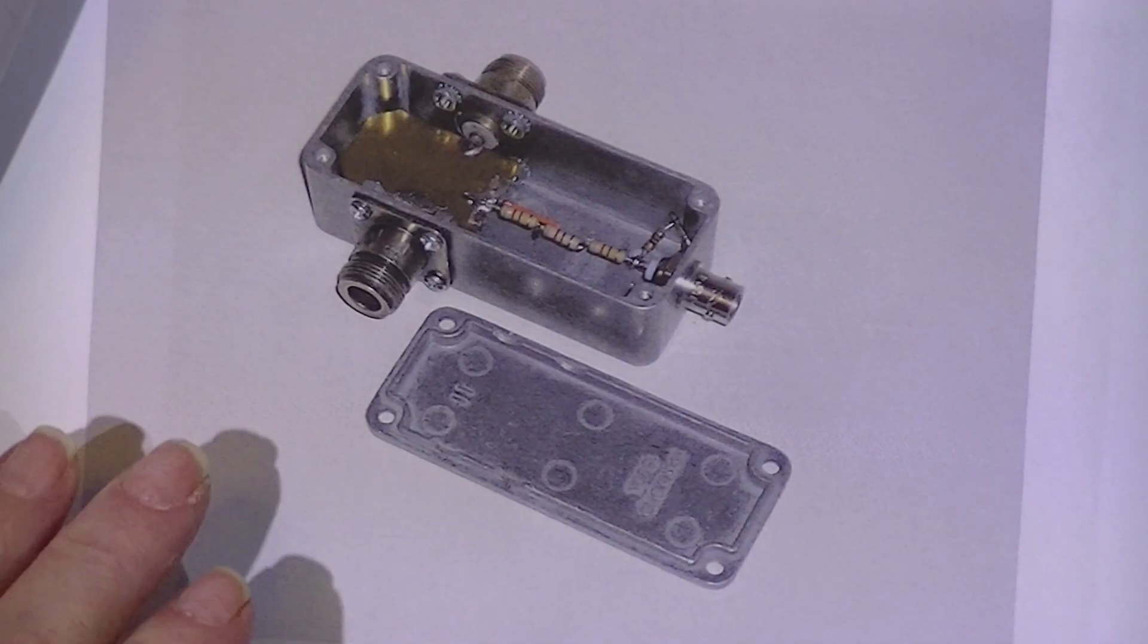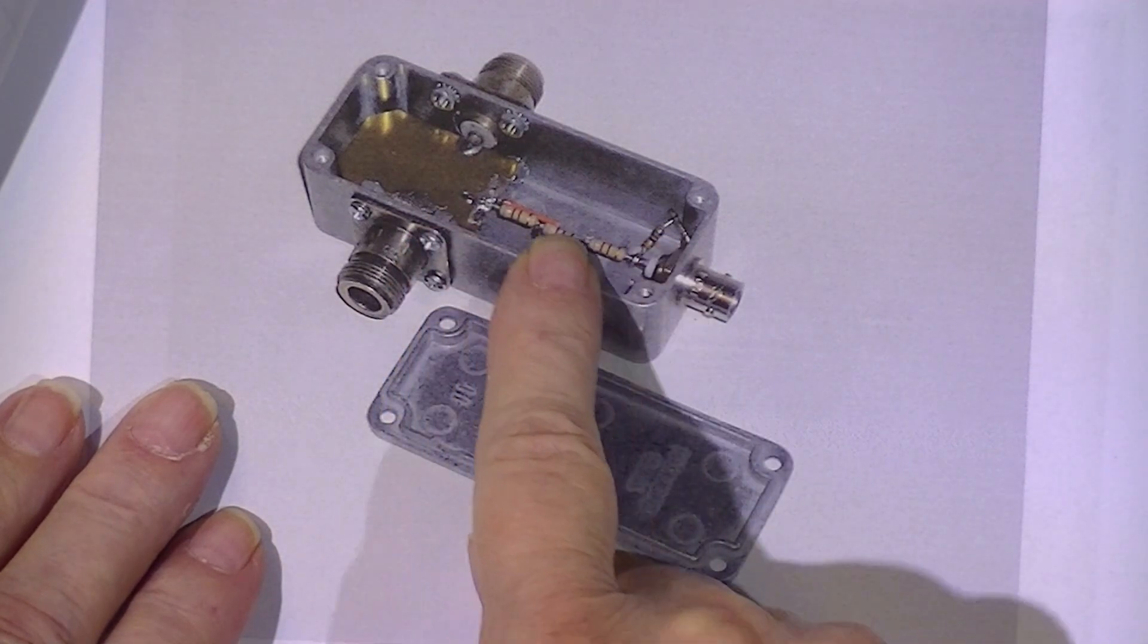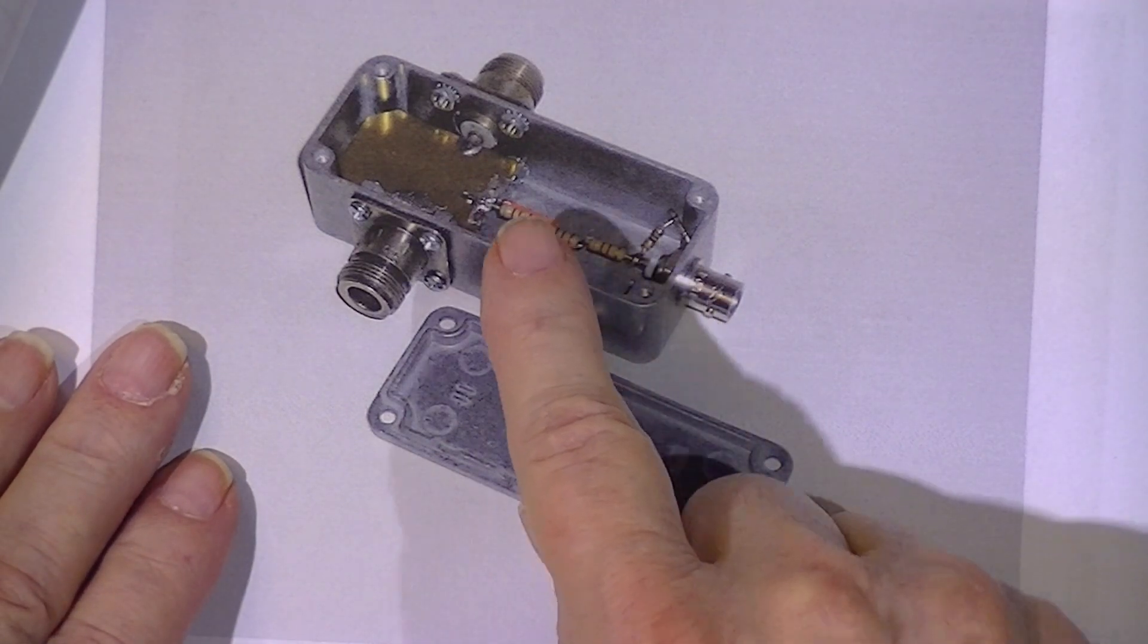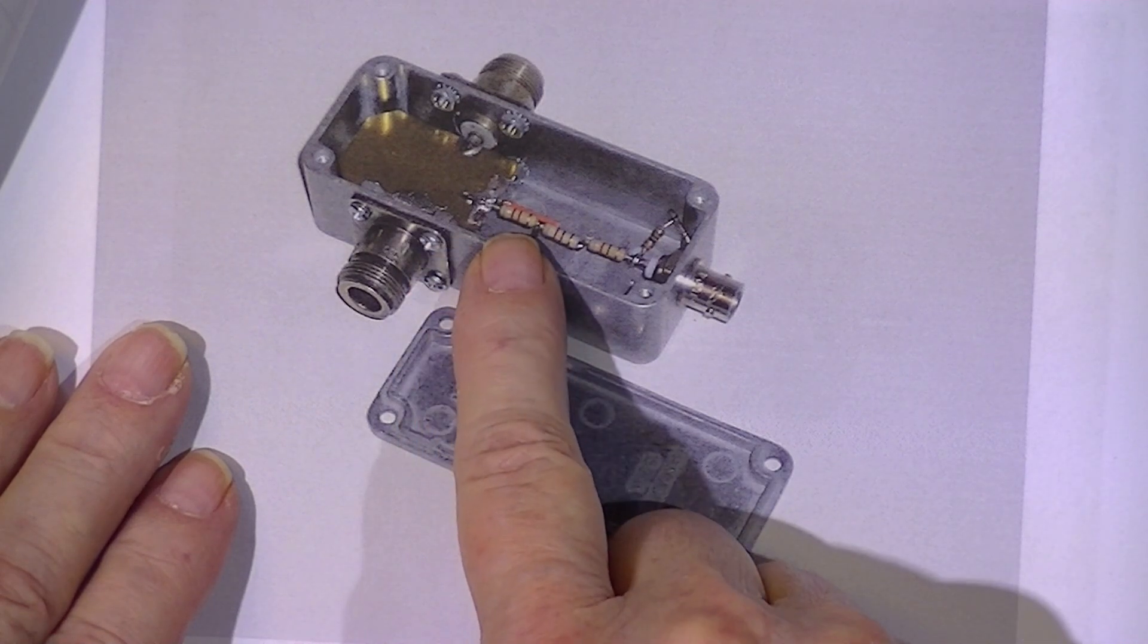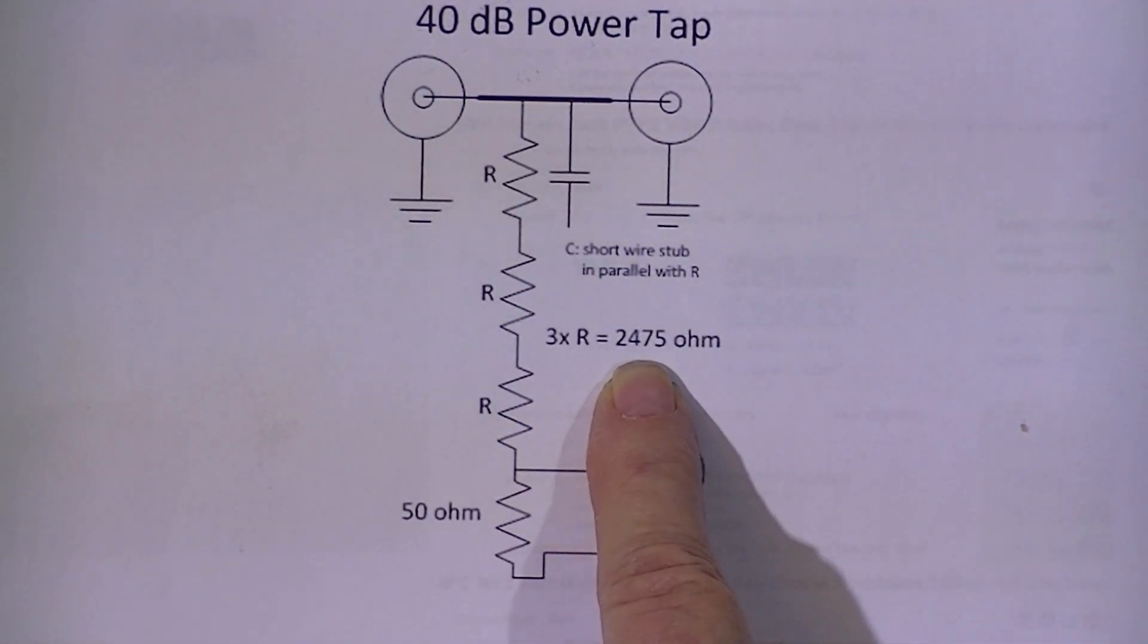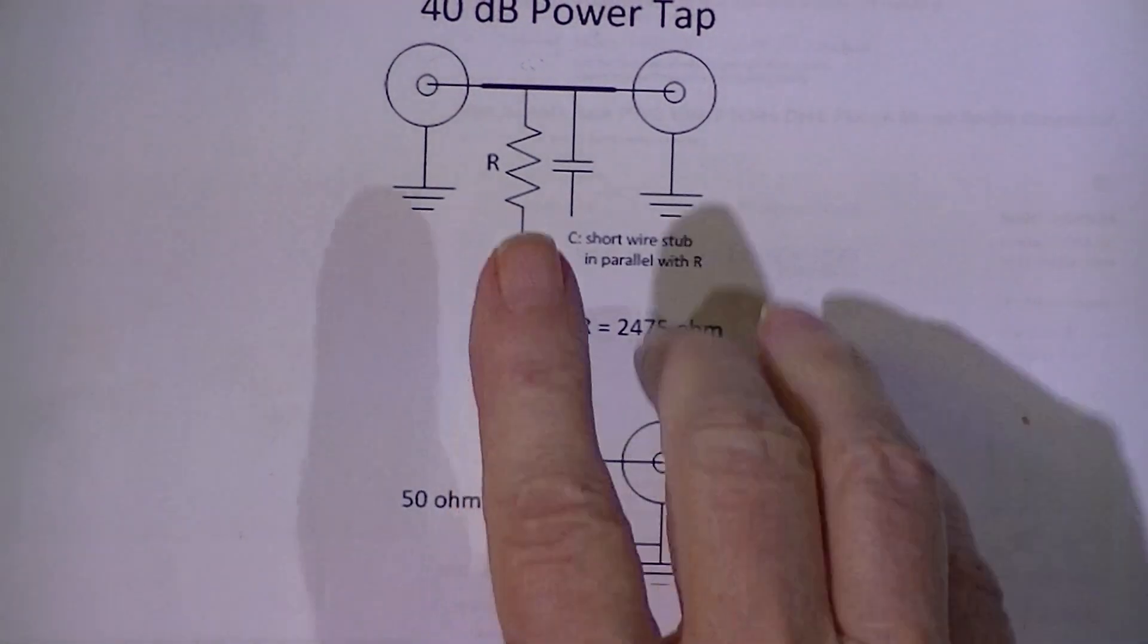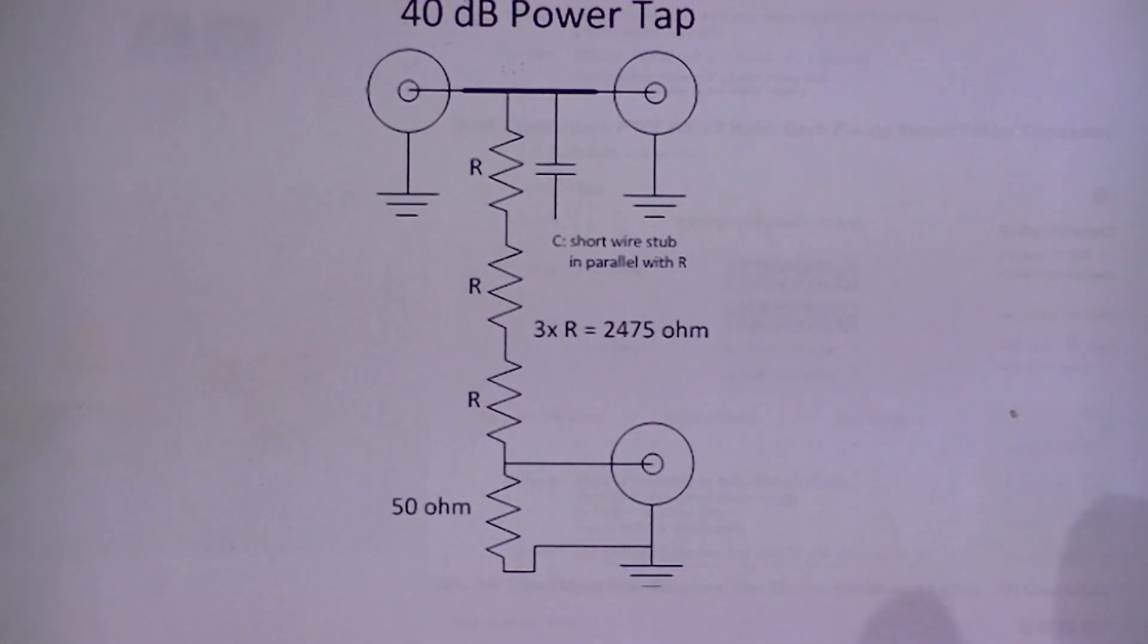The attenuator consists of a pass-through section and a resistive sampling section which is connected to an output port. There's a brass plate here that, in the parts list, is identified as an inductor. Then these three resistors. The three resistors total 2,475 ohms. And then there's a 50 ohm resistor that terminates the sample tap in 50 ohms. This whole thing is designed for use at 50 ohms impedance.